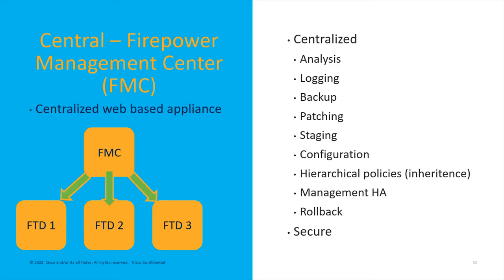Logging is also done in the FMC. When you're getting ACL hits and you want to see what type of connections are being established on all the firewalls, all of that is centrally collected and displayed on the FMC. You also have the ability to back up the software and config on each of your managed firewalls. You can do patching from the FMC, which allows you to centrally push the patch to the FMC, and then the FMC passes that patch through its own encrypted channel to each of the devices.